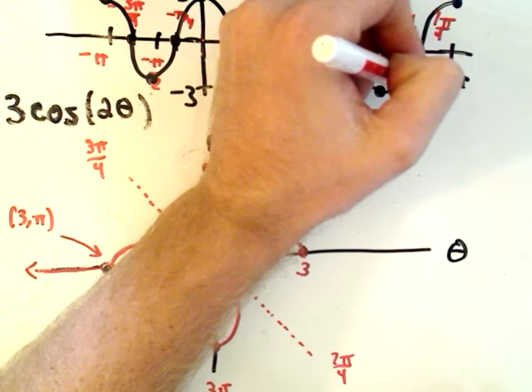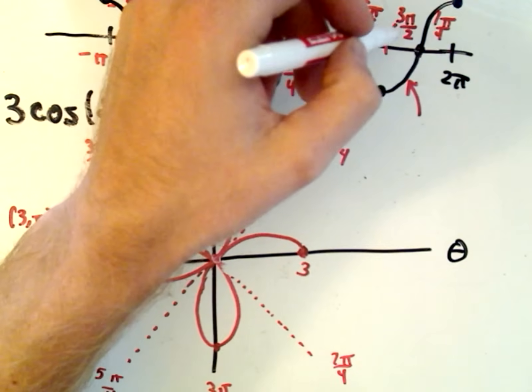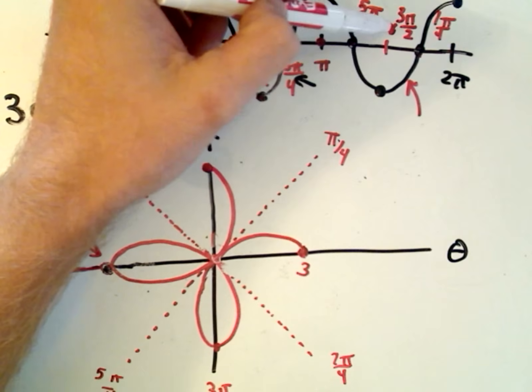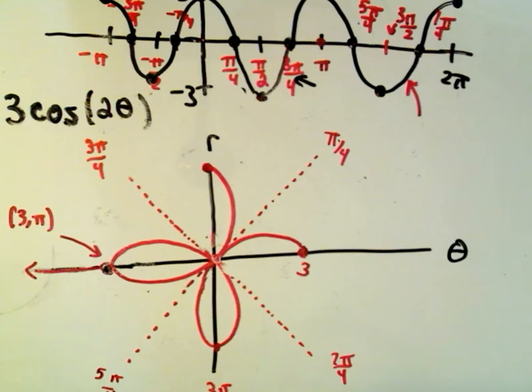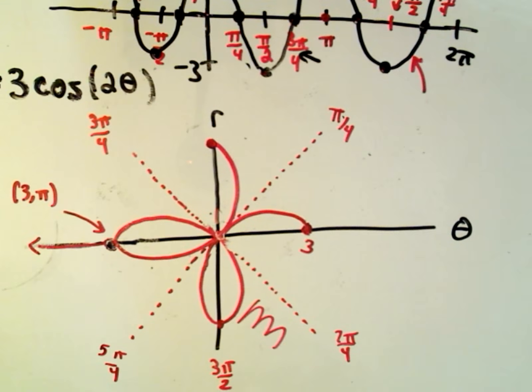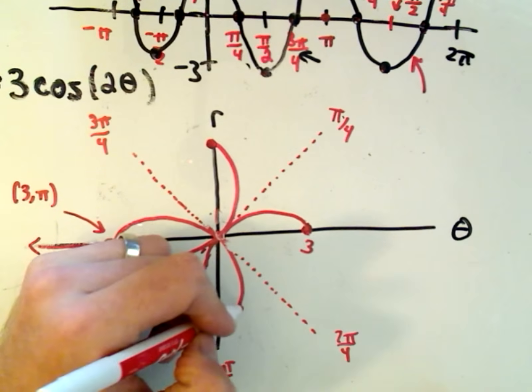As we label the portion of the graph that corresponds to the angle 3pi over 2 to 7pi over 4, that would normally be down here in this portion of the graph that corresponds to the angles 3pi over 2 and 7pi over 4. But what's going to happen now?